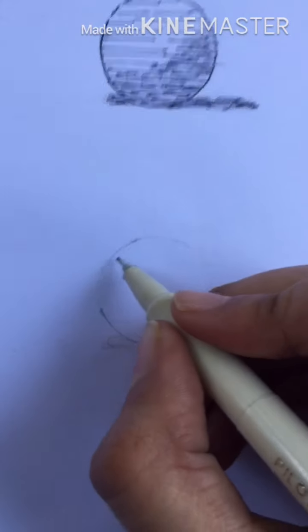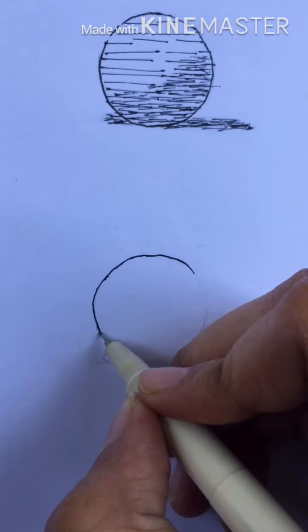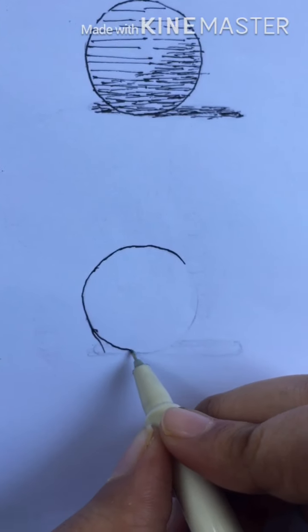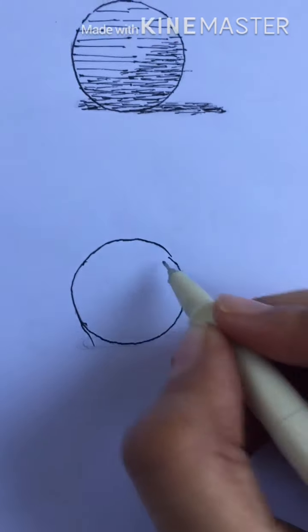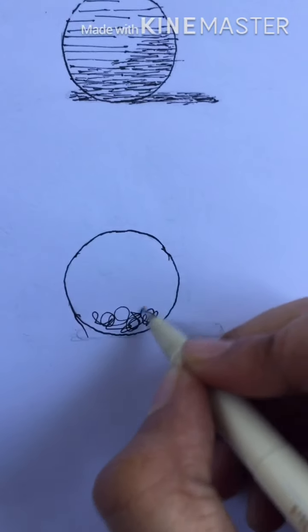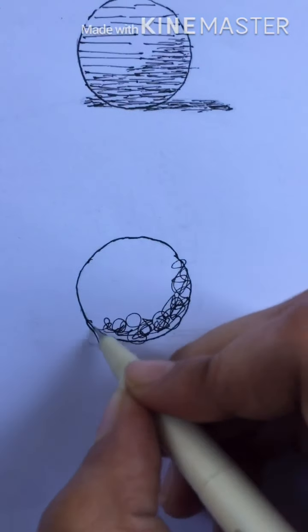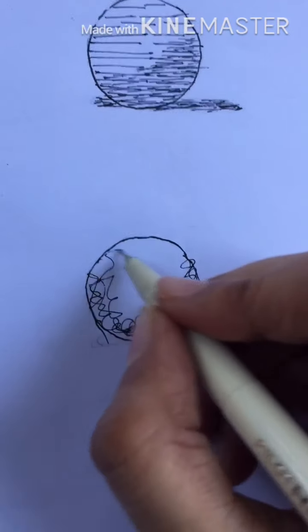The third technique we'll talk about is using random lines or squiggly lines. With these random lines, we'll be very loose. Our marks can create lines that go in various random directions.